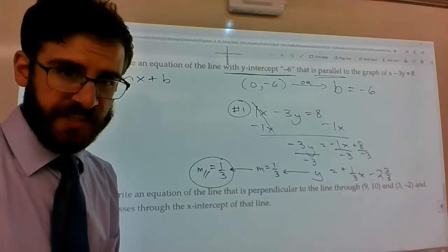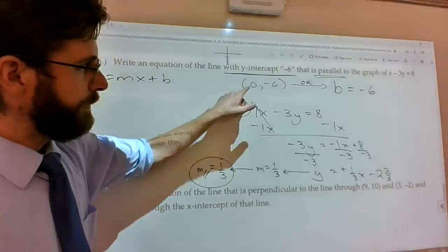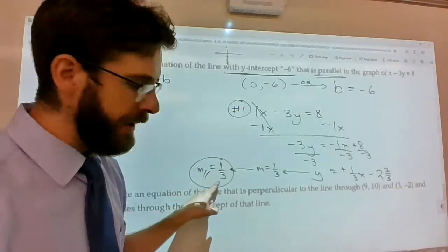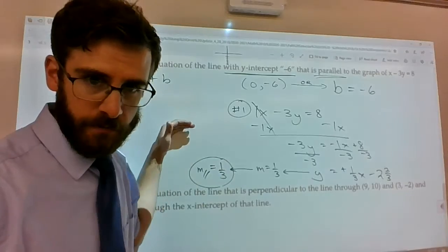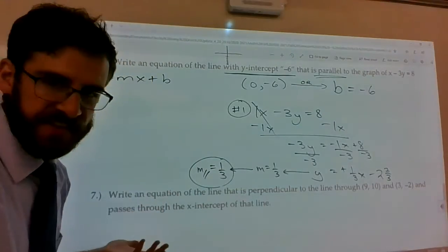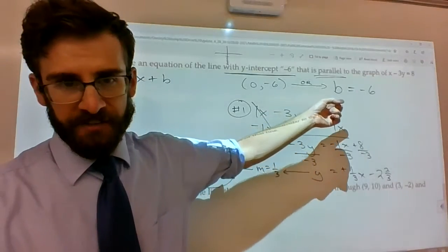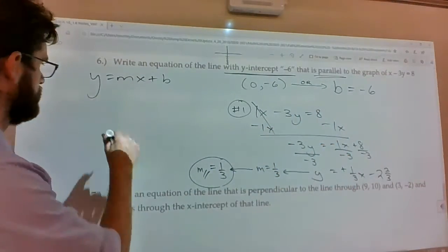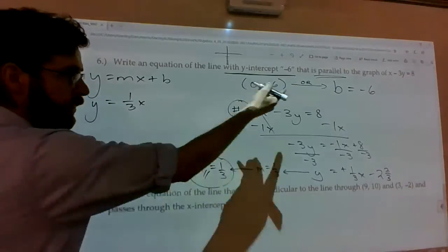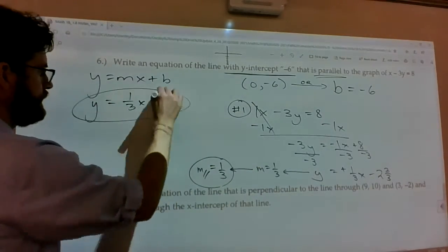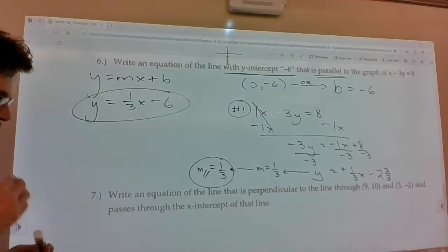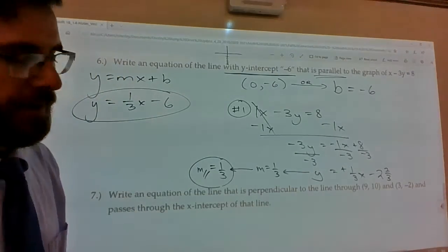So, normally, we would do step number 2 and say, plug x is 0, y is negative 6, and m is 1 third. I'd list it, boom, boom, boom, one right after the other. But, in this case, we kind of talked about how the b value is already known. I know what m is. I know what b is. So, there's your shortcut. All right. Last one.